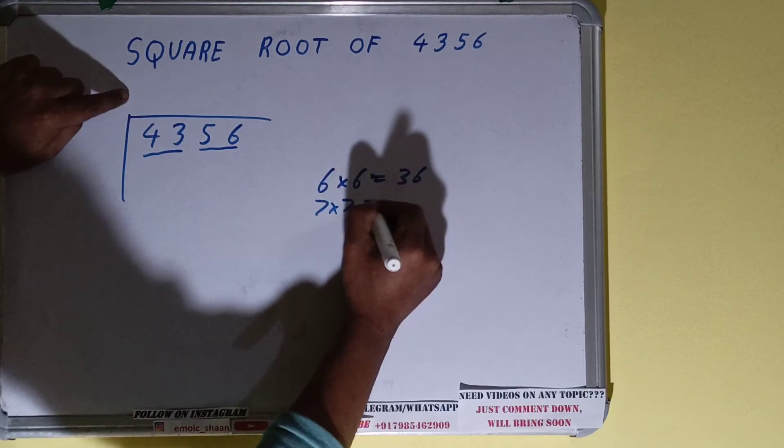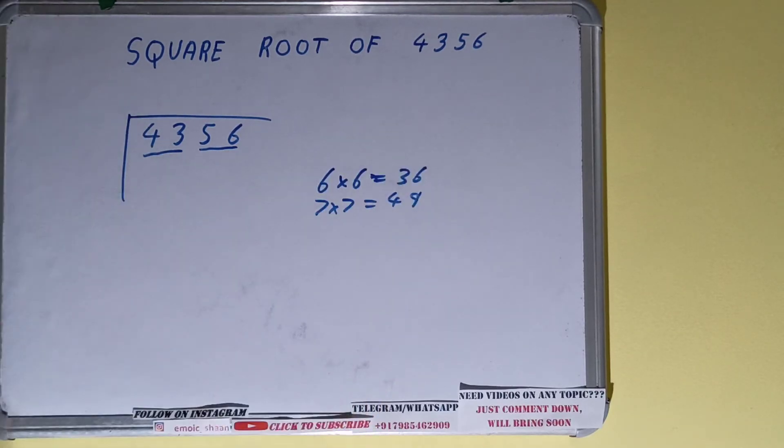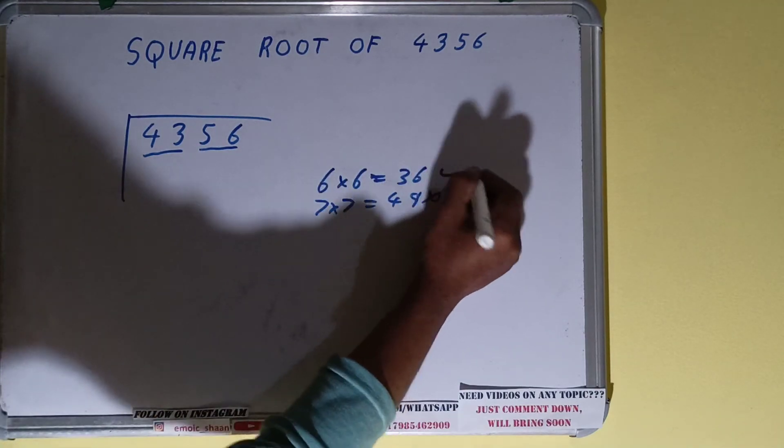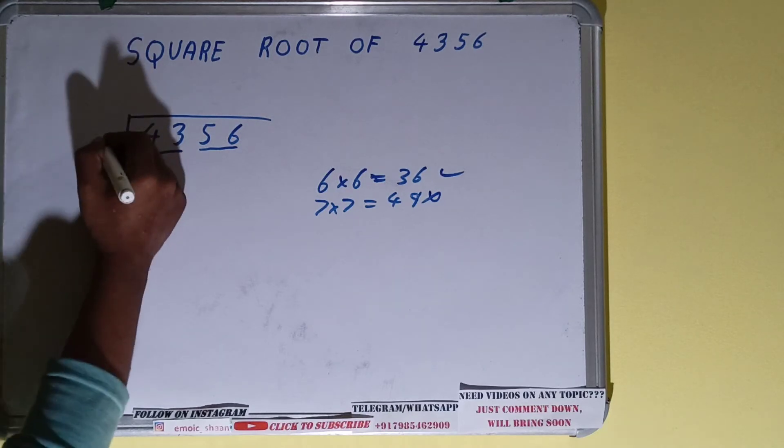If we take 7 here, we have to take 7 here as well. It will be 49, so we cannot go with 7 because 49 is greater than 43. So we have to go with 6. Okay, so 6 here and 6 here.